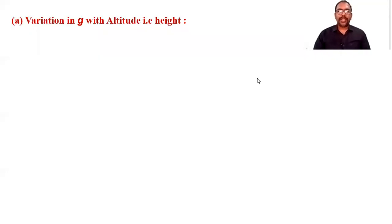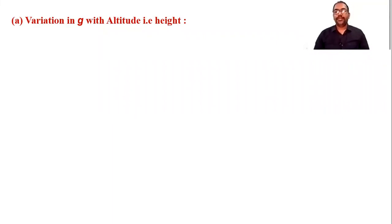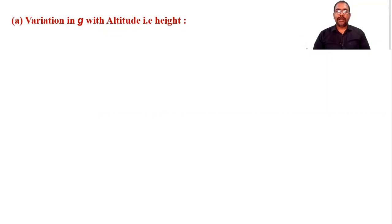Hello everyone. From chapter Gravitation, we have to start a new article: Variation of Acceleration due to Gravity with altitude. Acceleration due to gravity varies with three factors: altitude, latitude, and depth. We will cover all three. Let me start with the variation of acceleration due to gravity g with altitude.